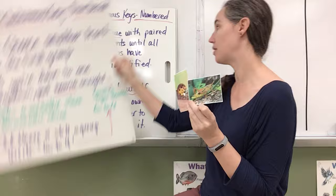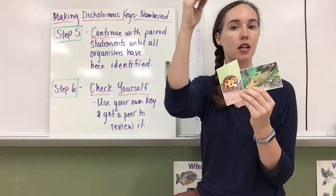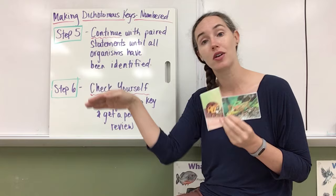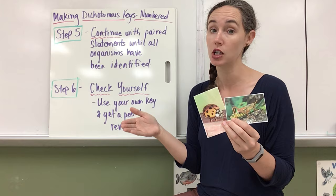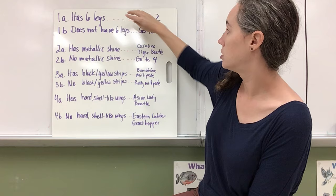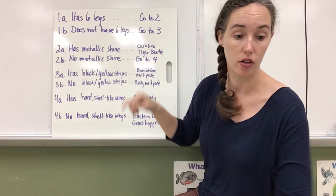And basically step five, you're just going to continue doing that. You're going to continue choosing traits, you're going to continue filling in those paired statements until all the organisms have been identified. And finally, you're going to go through and check yourself and get your key peer reviewed by somebody else, because that's the whole point, is to make a key that someone else can use to help identify organisms. So I made this final one and chose, again, has six legs or does not have six legs.